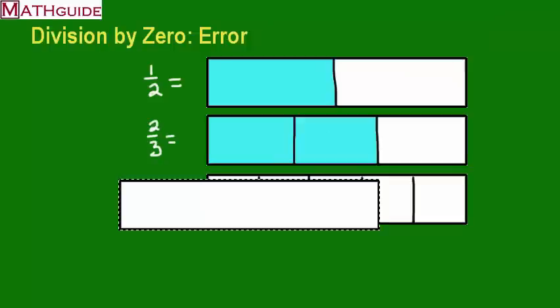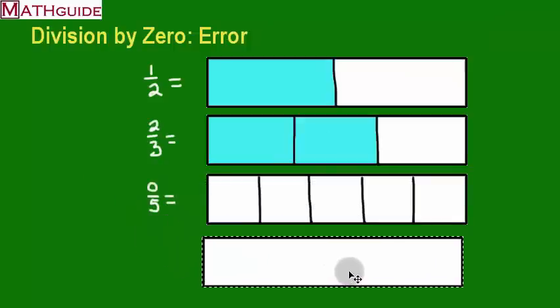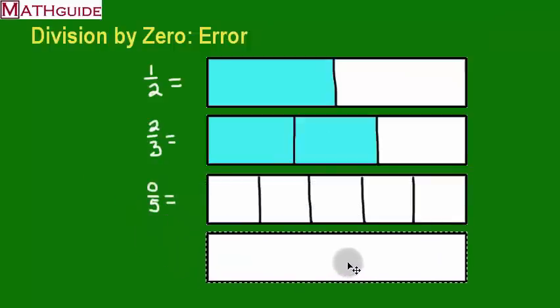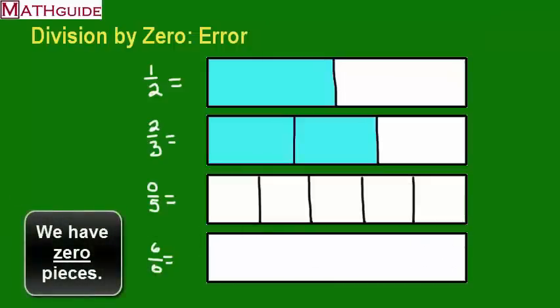Let's try this last one, and I'm hoping this is going to demonstrate the whole thing. Let's try six-zeroths. Now this is where the problem starts. Again, the denominator tells us how many pieces we have. So I'm supposed to divide this figure into zero pieces.